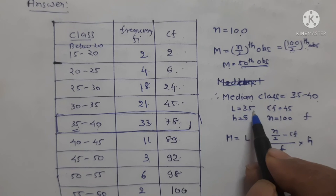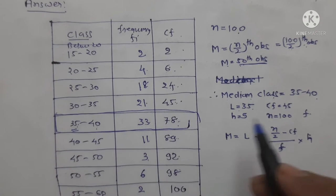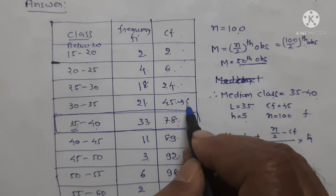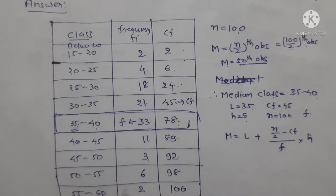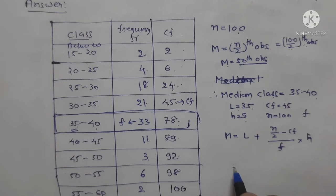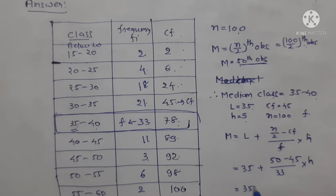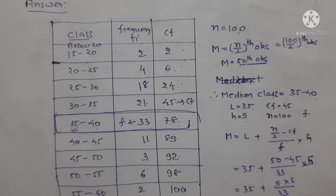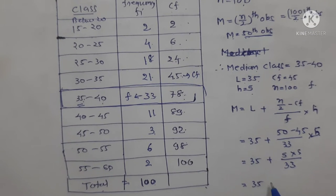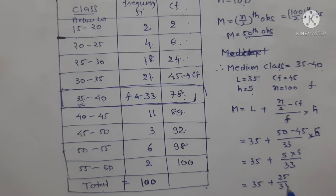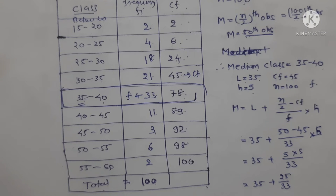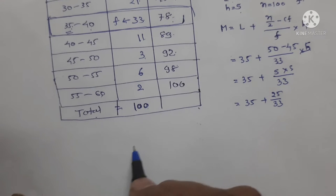Therefore this is the lower limit: l equals 35. The class height h equals 40 minus 35 equals 5. The cumulative frequency before the median class is 45. The frequency of the median class (small f) equals 33. So: m equals l plus (n/2 minus cf) upon f into h. m equals 35 plus (50 minus 45) upon 33 into 5. m equals 35 plus 25 upon 33.